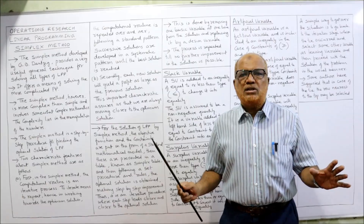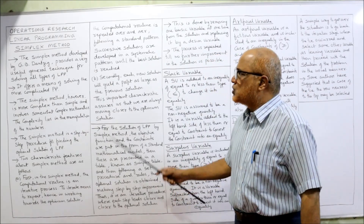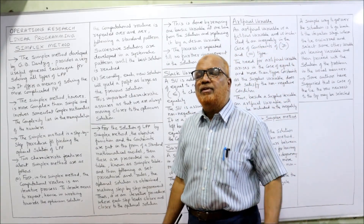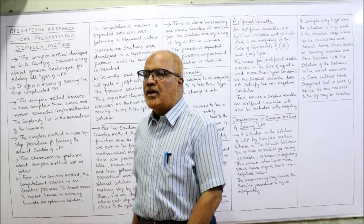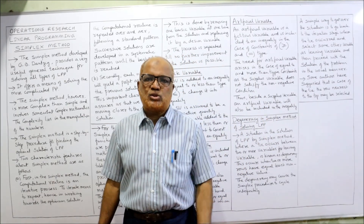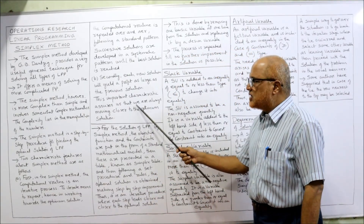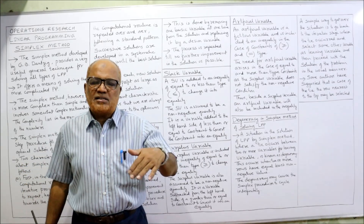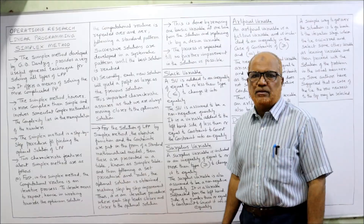We have to keep repeating the same procedure and rules. Successive solutions are developed in a systematic pattern until the best solution is reached. The second feature: each new solution will yield a profit as large as or greater than the previous solution. As we go on repeating, successive solutions give more profit than the previous one. This shows that we are always moving closer and closer to the optimum solution.